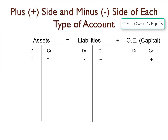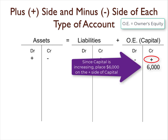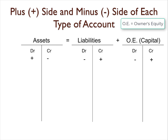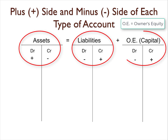Now let's say the capital account increased by $6,000. Which side of the capital account would you put the $6,000 on? Capital increases on the right or credit side, so you would put the $6,000 on the right side. So we now know the plus and minus sides for assets, liabilities, and equity.